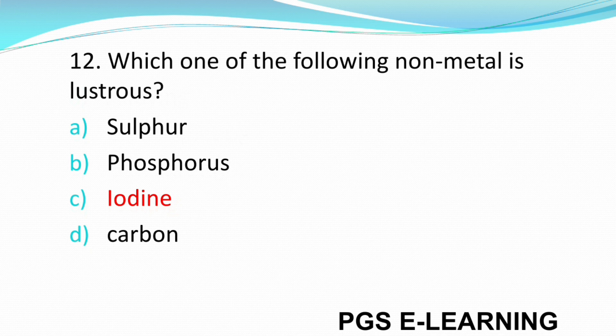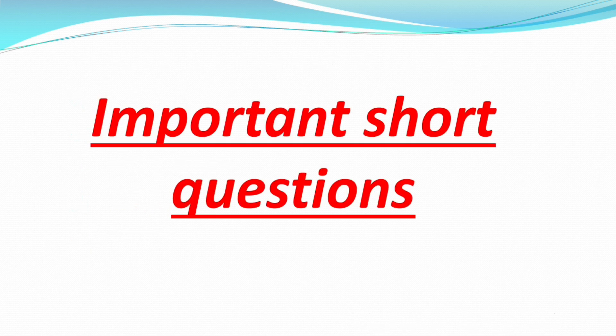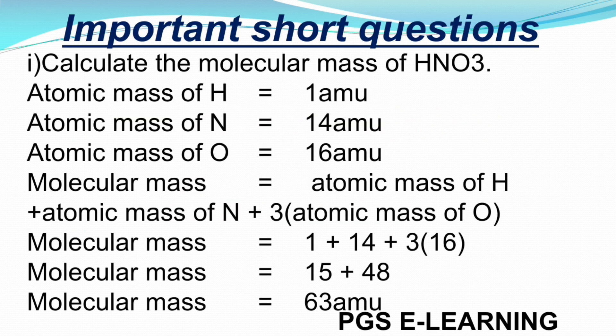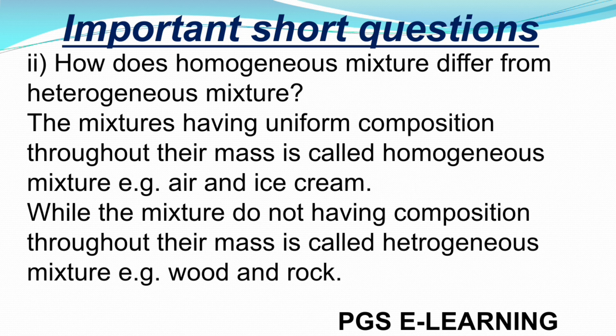Now we will discuss some important short questions. Question 1: Calculate the molecular mass of HNO3. The solution is given. If you have any query, you can comment and ask me. Question 2: How does a homogeneous mixture differ from a heterogeneous mixture? Mixtures that have uniform composition are called homogeneous, and mixtures which do not have uniform composition throughout are called heterogeneous mixtures.